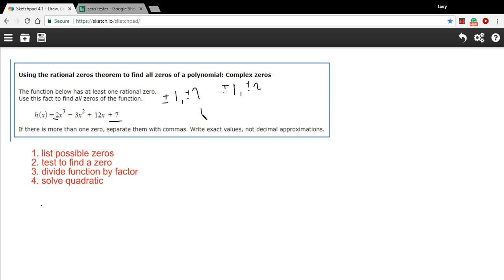So 1 over 1 is 1. So positive or negative 1 is one of our possible or two of our possible rational zeros. And we put 1 over 2. We got positive and negative 1 half. And 7 over 1 is 7. So positive and negative 7 are possible zeros. And positive and negative 7 halves as well.